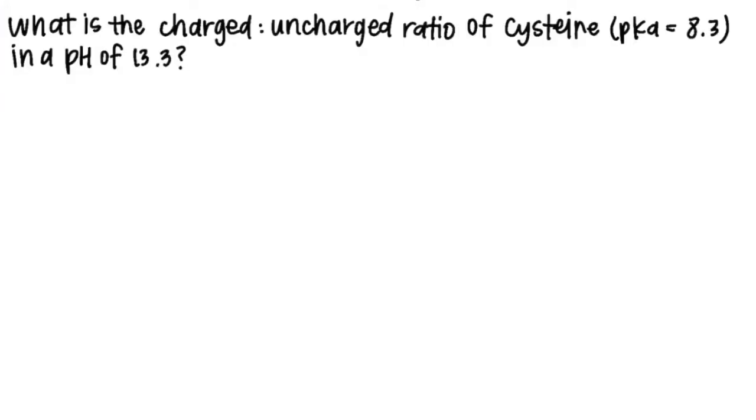So let's go ahead and take a look at another example. This question is asking for the charged to uncharged ratio, like the last one, but now of cysteine. So again, the first step is to write out the deprotonated and protonated form of the amino acid side chain, R group residue.